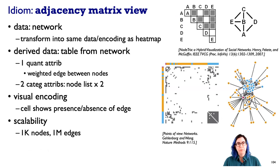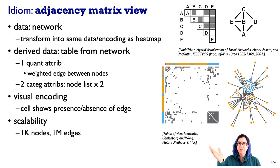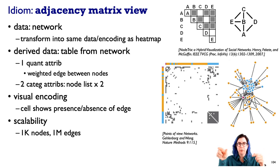Another major approach is to turn a graph into a table — the adjacency matrix. We derive a table from the network data, treating the list of nodes as categorical attributes and encoding edges as cells: if there's an edge between two nodes, that cell is filled in, weighted or unweighted. For an undirected graph, only half the matrix triangle is needed; directed graphs would use the full matrix.